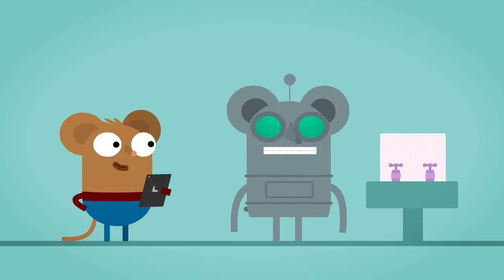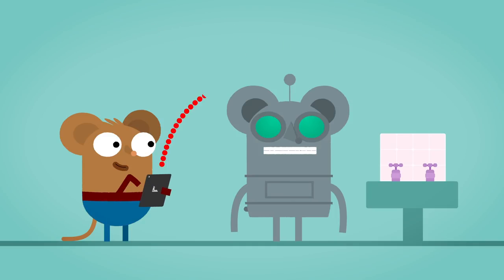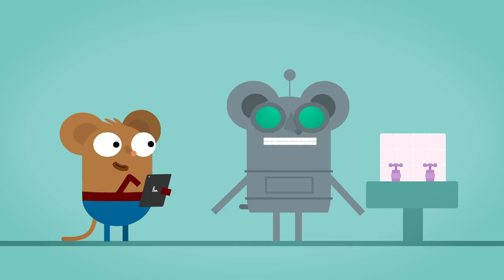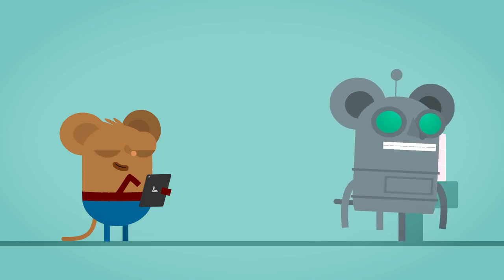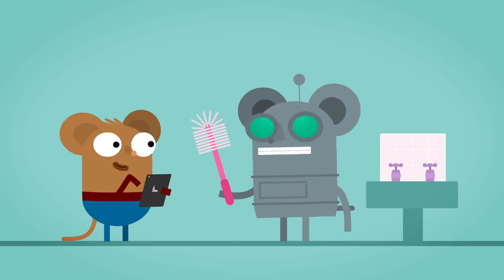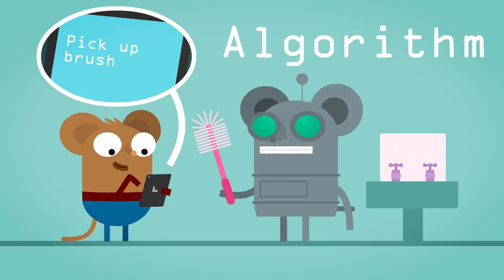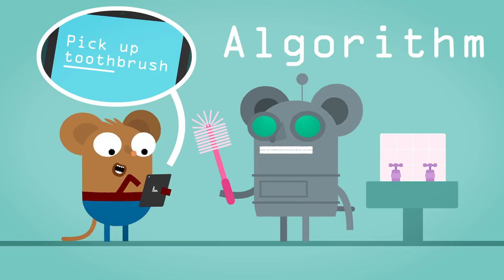If we want a computer to understand how to do something, we need to give it an algorithm. Algorithm sounds like a big word, doesn't it? But actually, an algorithm is something very simple but important.